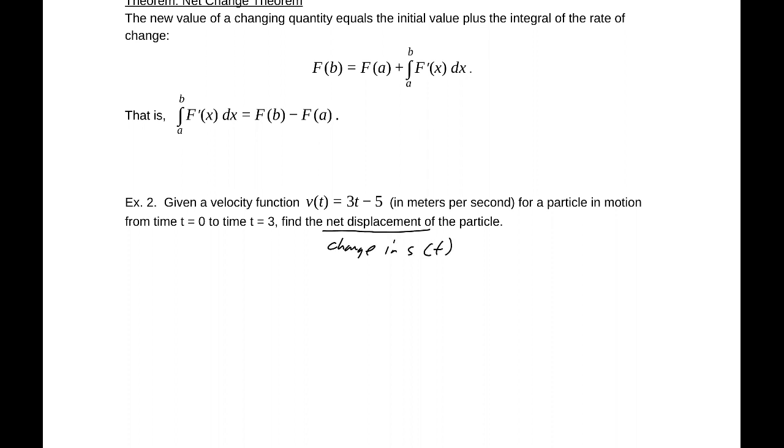The net displacement is simply the change in s(t). So the change in s(t) is going to be the integral from 0 to 3 of 3t minus 5 dt. That would be 3t squared divided by 2, so that's 3t squared over 2, minus 5t evaluated at 0 and 3, which is negative 3 over 2 meters. That is my displacement.